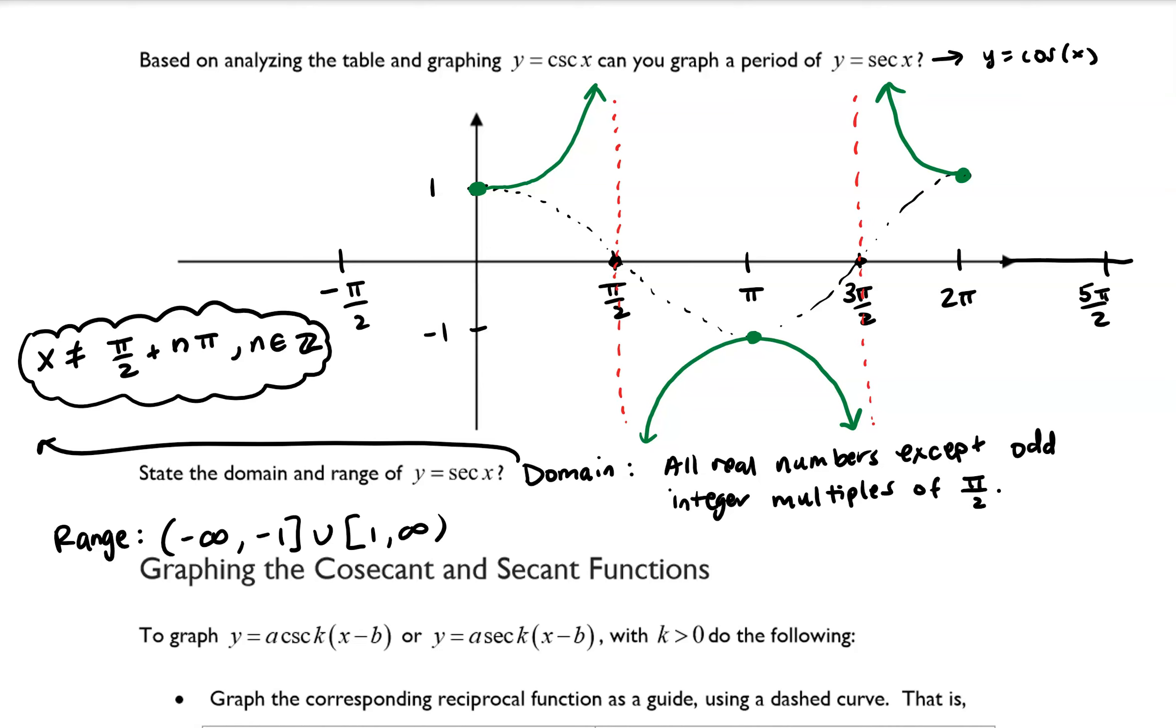Plug in integers and verify that that is in fact correct. And if you plugged in 5 or something like that, or 6, would that give you an odd integer multiple of pi over 2? So I will leave that up to you to verify.